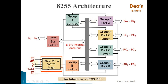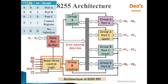In addition, there are two pins called A0 and A1, which are used to select ports from Port A, Port B, and Port C. When chip select is 0 and A1, A0 are 0,0 — Port A is selected. When A1, A0 are 0,1 — Port B is selected. When A1, A0 are 1,0 — Port C is selected.